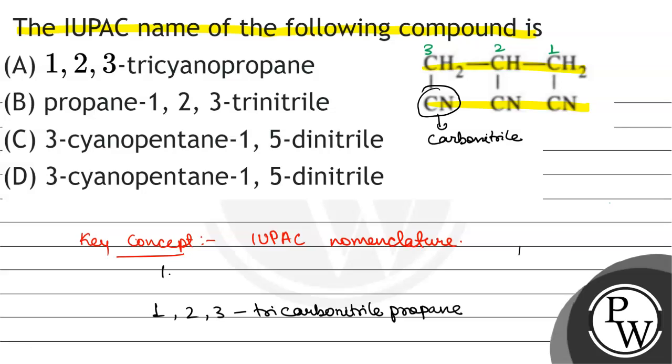That is 1, 2, 3 tricarbonitrile propane. So the correct option will be option A.